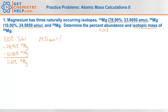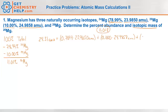Because to find a percentage you multiply a decimal by a hundred. To convert a percent back into a decimal you divide it by a hundred. So 0.7899 times its mass which was 23.9850 AMU, plus the second isotope magnesium-25: 0.100 times its mass 24.9858 AMU, plus the third one magnesium-26. We know the abundance — we just found it was 11.01%, so 0.1101 times its mass. We don't know its mass so we're going to solve for that — I'll just call it x.